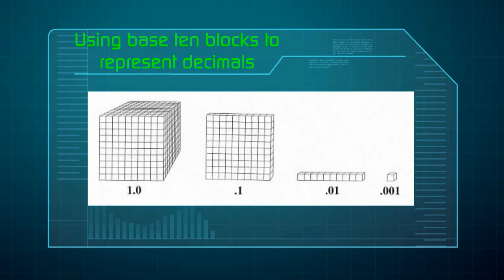Let's use base ten blocks to think about decimals. When representing decimals, our cube is going to equal one whole. The flat equals one tenth, because there are ten in each cube. The rod equals one hundredth, because there are one hundred in each cube. And the single unit equals one thousandth, because there are a thousand in each cube.